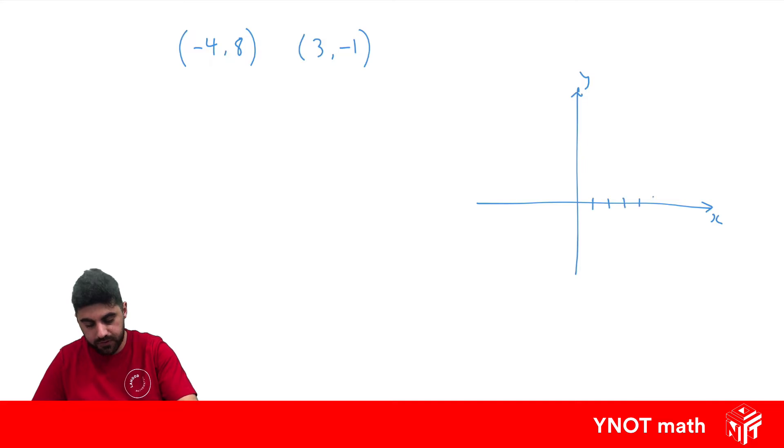Marking the y-axis: 1, 2, 3, 4, 5, 6, 7, 8. Then the x-axis: 1, 2, 3, 4, minus 4. And 1, 2, 3, and got minus 1.